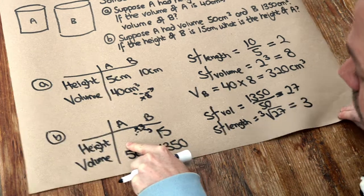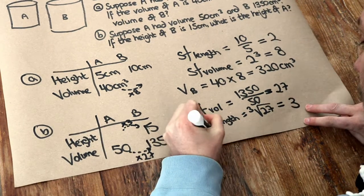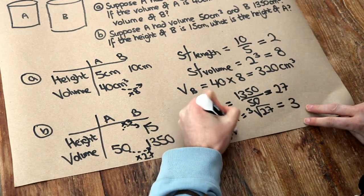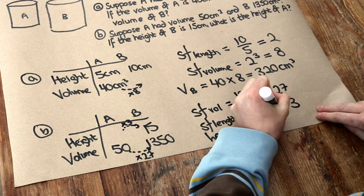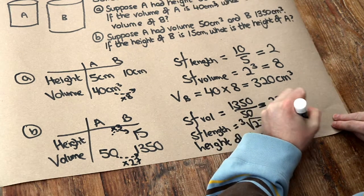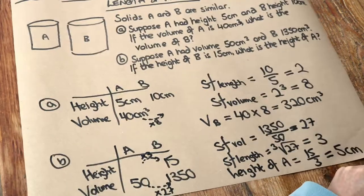Well, clearly it's 5, so the height of A, we can see we do 15 divided by the 3, we get 5 centimetres, and that is the final answer.